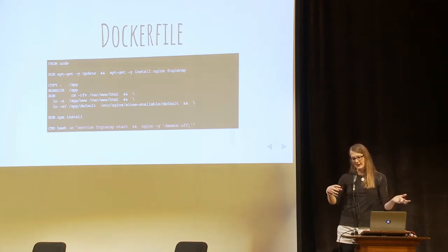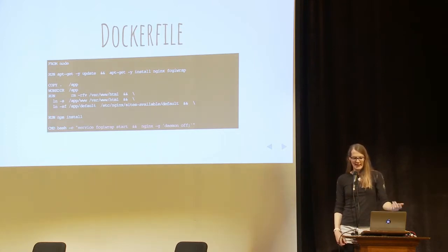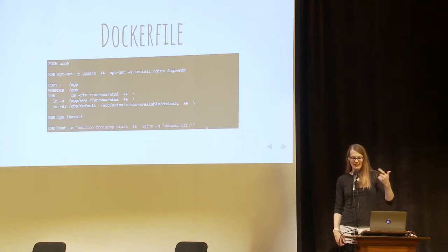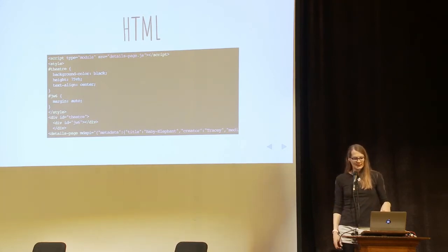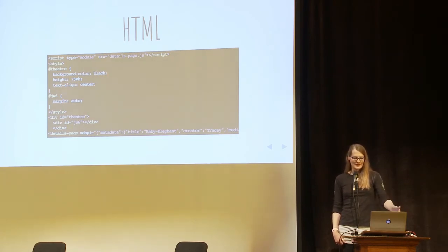We're going to fetch some JSON resources and cram them into the JavaScript. Do some basic setup, run NPM install for our dependencies, and when the pod starts, all we have to do is fire up our little FastCGI back-end wrapper and NGINX. Here is a condensed version of the HTML — it includes the JavaScript file. We are going to use web components, there's just a little bit of CSS there.